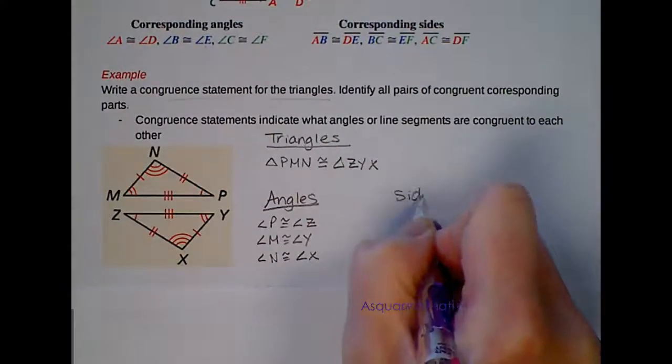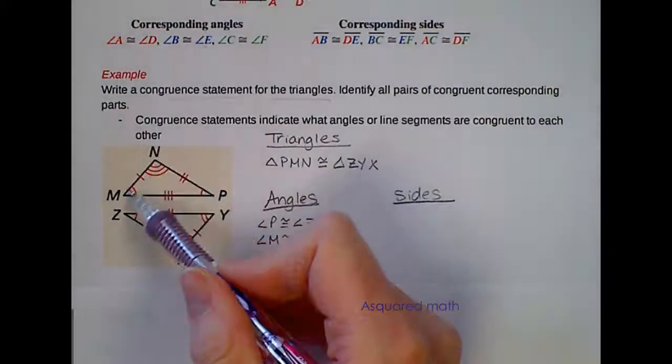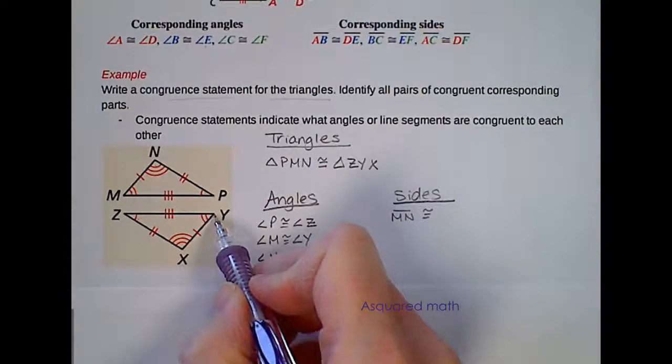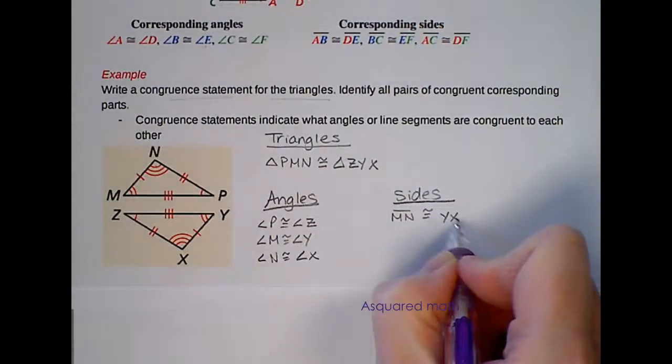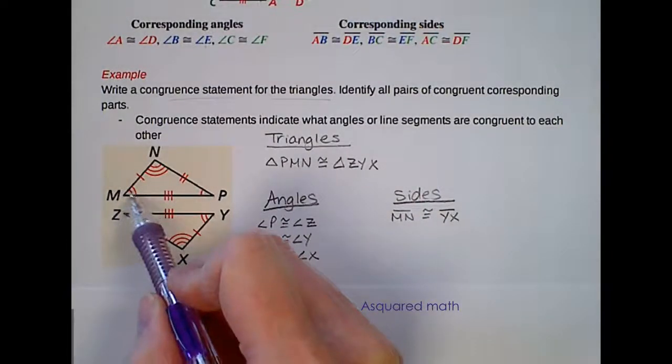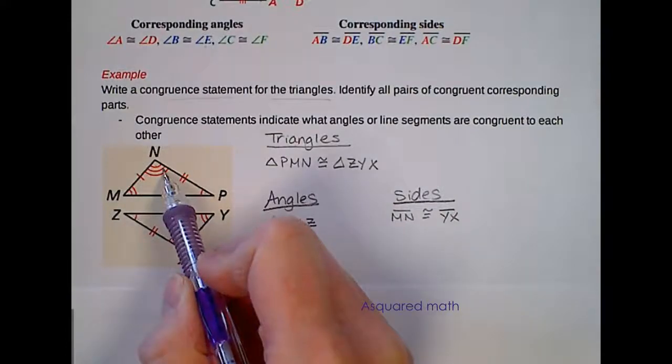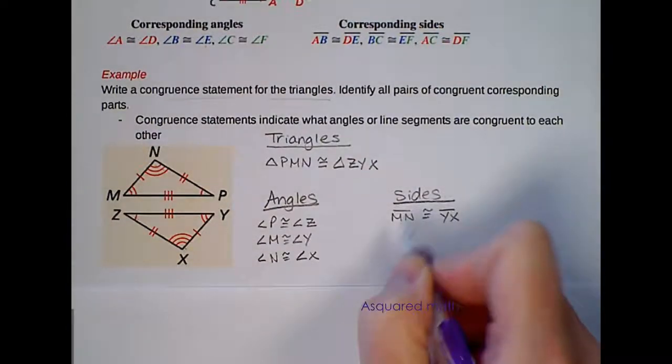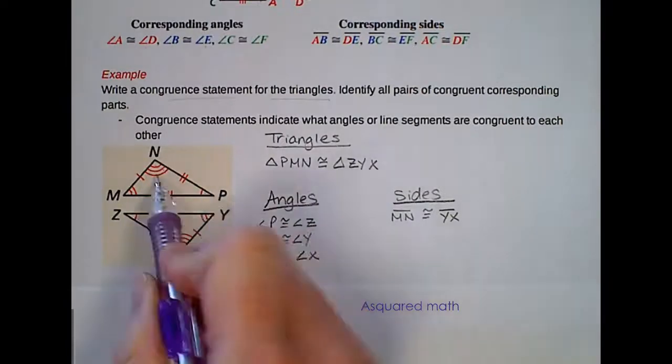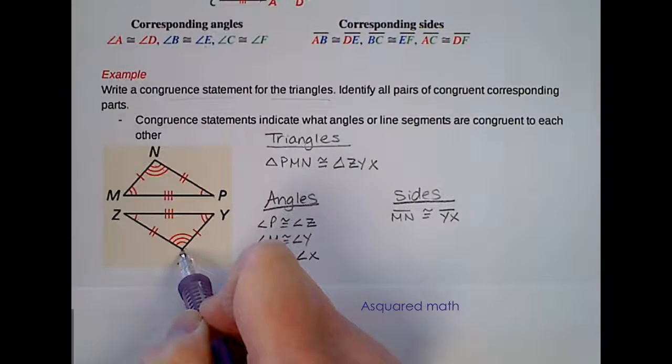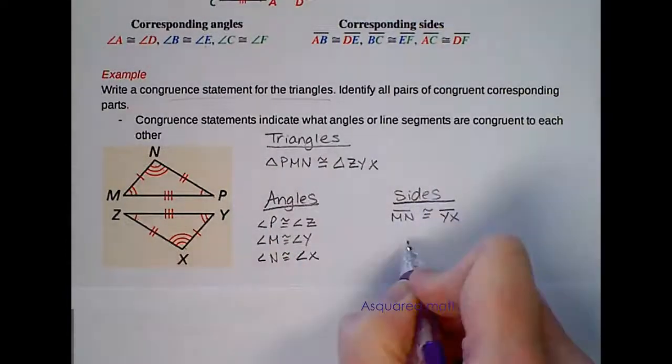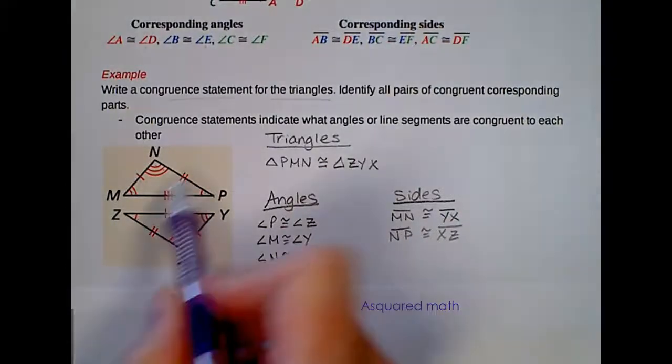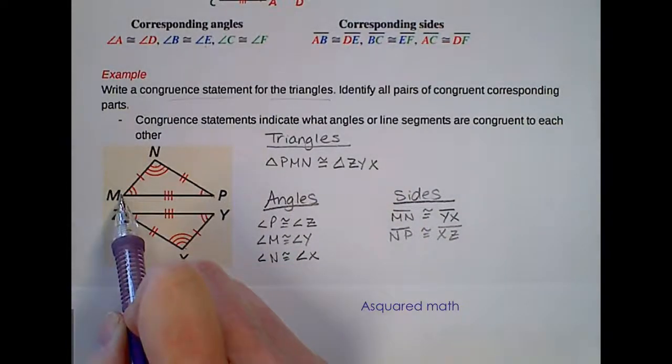Now to do the side lengths. The marking on the top triangle with one mark is MN. So line segment MN is congruent to YX. Notice that on this top triangle I started with the vertex that has two marks and went up to the one with three marks. So I want to do the same thing on the bottom triangle. That's why I listed Y first and X second. Now let's move on to N and P. I'm going from three markings to one, and then we're going to be congruent to XZ. So NP is congruent to XZ. And then lastly we have PM will be congruent to ZY.